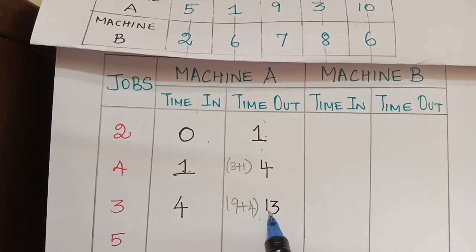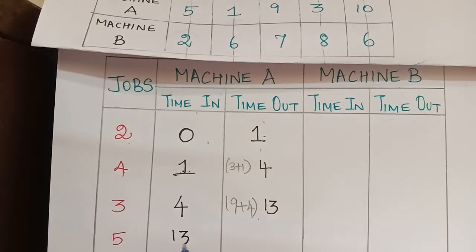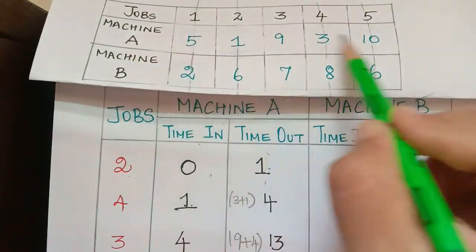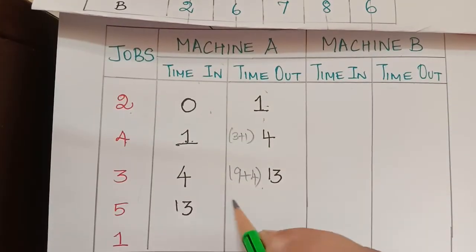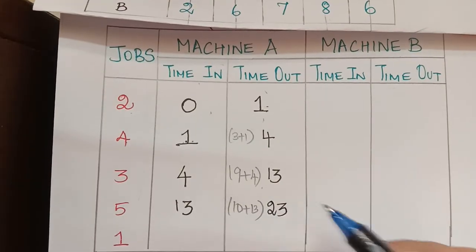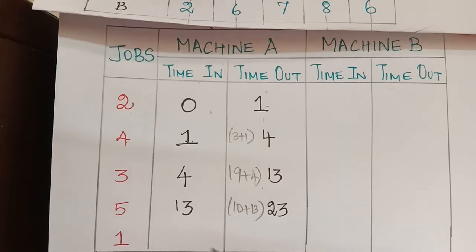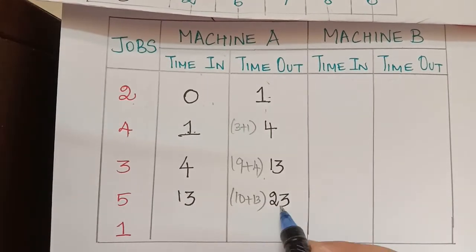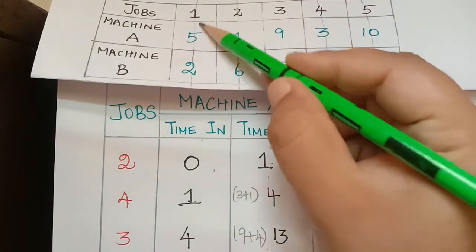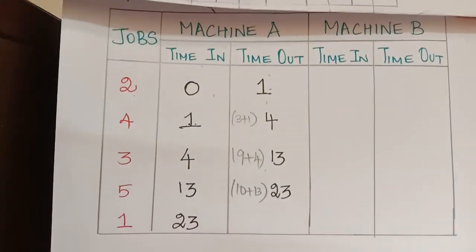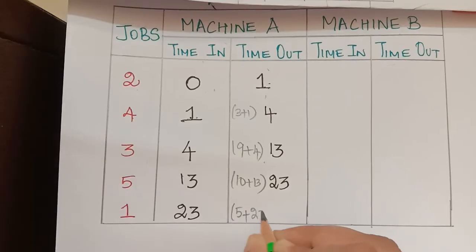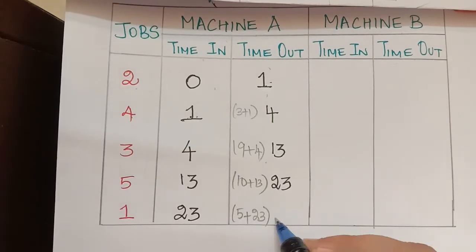Job 5's time in is 13. It performs for 10 hours in machine A, so 10 plus 13 equals 23 — time out is 23. Job 1 enters at 23 and performs for 5 hours in machine A, so 5 plus 23 equals 28 — time out is 28. This last value of 28 is the time consumed by machine A.